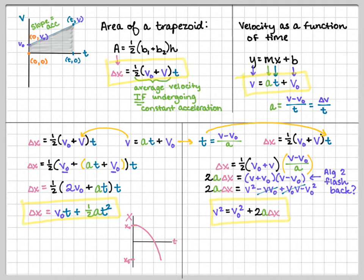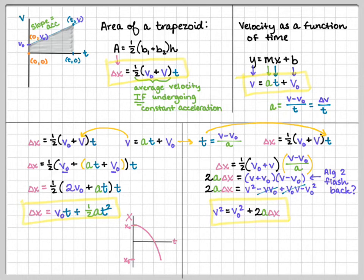So these four equations describe constant acceleration. Each equation is missing one variable: the trapezoid (area) equation has no acceleration; the slope-intercept velocity equation has no displacement or position; the third equation (Δx = v₀t + ½at²) has no final velocity — useful when there's no mention of final speed; and the fourth equation (v² = v₀² + 2a·Δx) has no time — this is the time-independent constant acceleration equation.